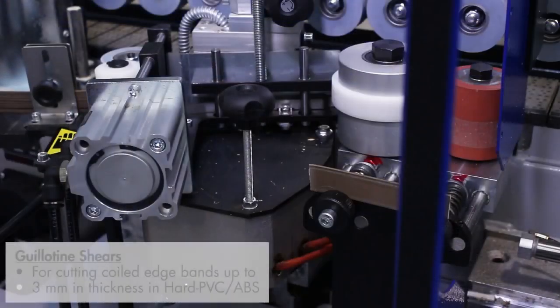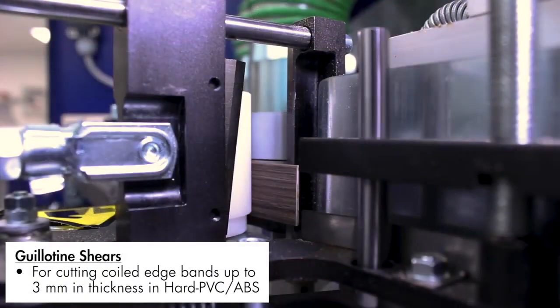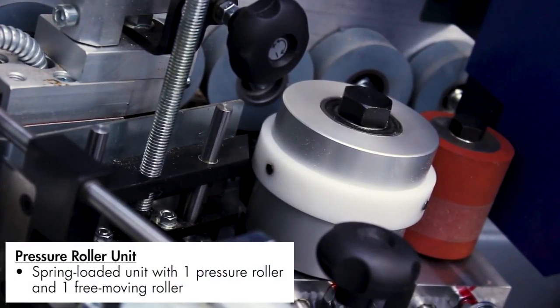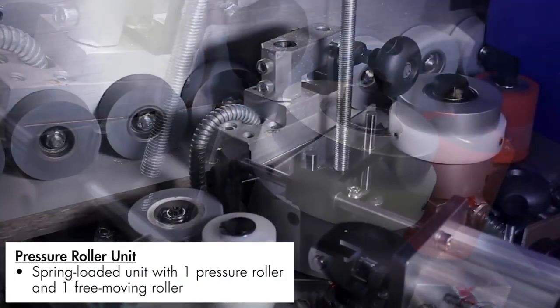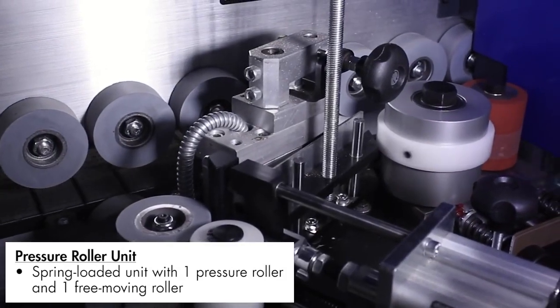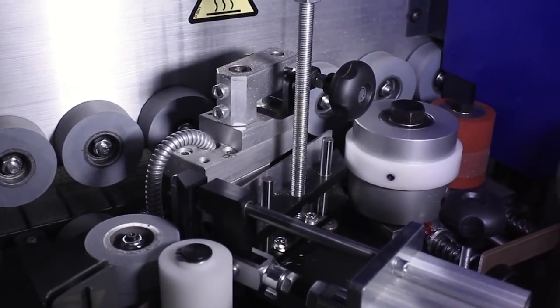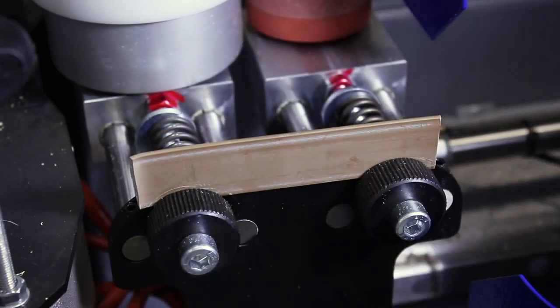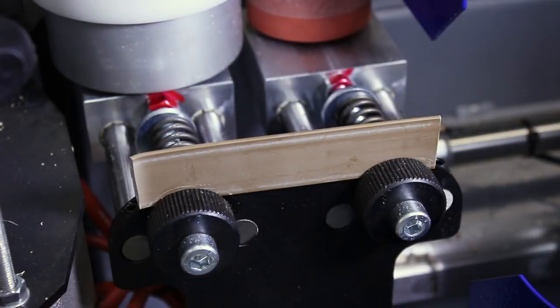Adjacent to the glue roller are the guillotine shears for cutting coiled edge bands up to 3mm in thickness, and the pressure roller unit. This unit consists of one larger roller followed by a smaller one, with the purpose of improving the glue bond between the edge and the material. The unit is mechanically spring-loaded and, thanks to the quickset system, can be adjusted exactly to the required edge thickness.